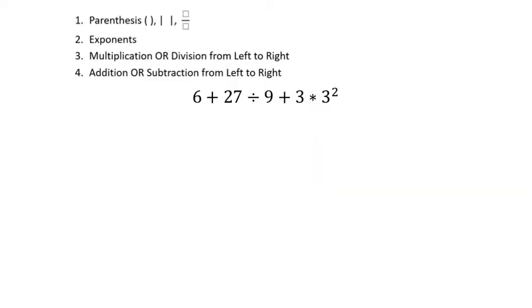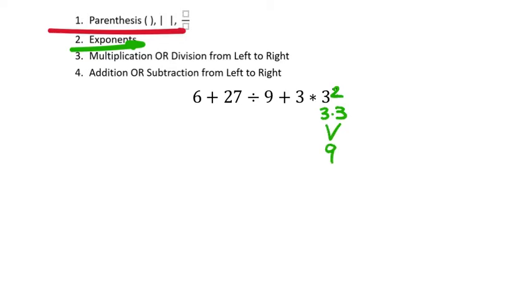As usual, we're going to use the order of operations. I do not see parentheses here, but I do see an exponent — particularly that 3 to the power of 2. So 3 to the power of 2 makes that 3 times 3, which is 9. Just focus on each part. That's the whole point of the order of operations: it breaks long or big problems up into smaller, more manageable problems. So that's 3 times 3, which is 9. I don't see any other exponents, so the rest of the expression stays the same: 6 + 27 ÷ 9 + 3 × 9.